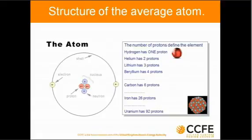The number of protons, shown in the diagram as a little pink ball, define what it is, and it always amazes me. We can have such different things as gases, metals, rocks, carbon, coal, and the only difference in the material, if you like, is the number of protons in the middle of the atoms.